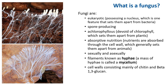A fungus is eukaryotic, possessing a nucleus, which sets them apart from bacteria. They are spore-producing and achlorophyllous — devoid of chlorophyll — which sets them apart from plants. They are organisms with absorbent nutrition; nutrients are absorbed through the cell wall, setting them apart from animals. They often reproduce both sexually and asexually via filaments known as hyphae, or mycelium. These are usually tubular, branched, interconnected, and interwoven, typically surrounded by a cell wall consisting mainly of chitin and beta-1,3-glucan. This definition demonstrates the uniqueness of fungi.